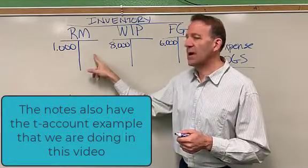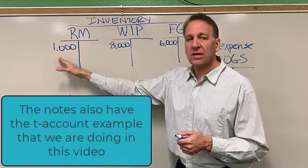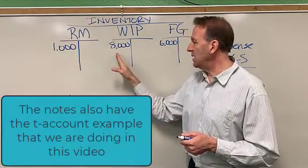So these are the debits. These are the credits. And since these are assets, debits will increase this asset and a credit will decrease. Debit increase, the credit will decrease.